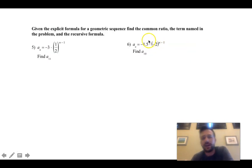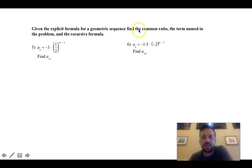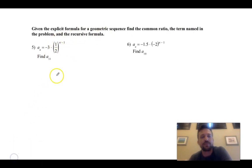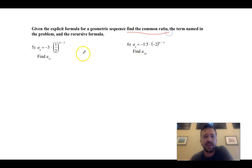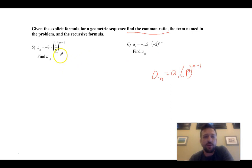So given the explicit formula for the geometric sequence, find the common ratio, the term named in the problem, and the recursive formula. The recursive formula is where you have to know the previous term in order to get the next term. To find the common ratio — that's easy because we have the formula. Remember, it's supposed to be r raised to the (n minus 1), so our common ratio is going to be the thing being raised to the n minus 1. So our ratio is 1 half.